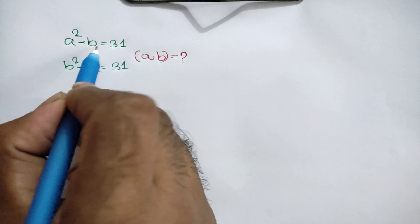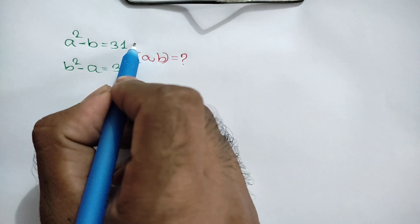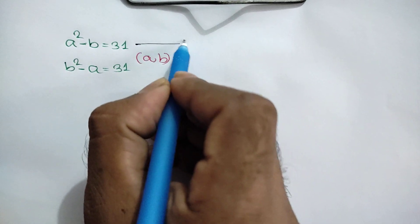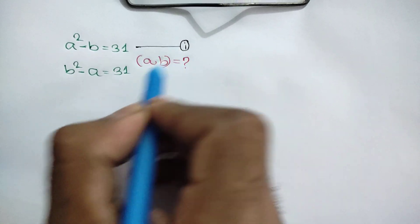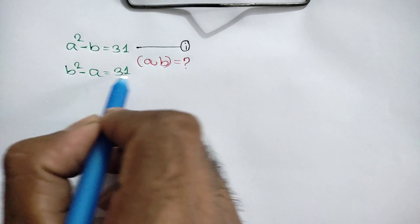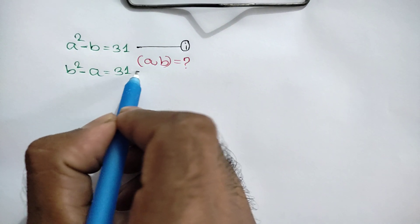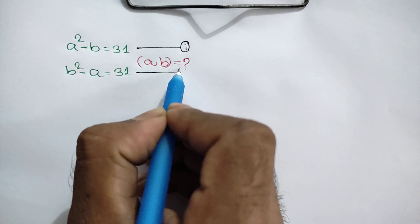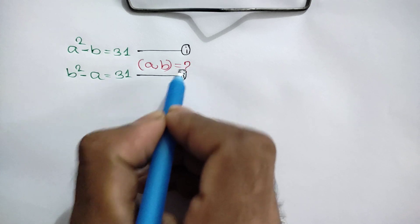A squared minus B equals 31 is called equation number 1, and B squared minus A equals 31 is called equation number 2.